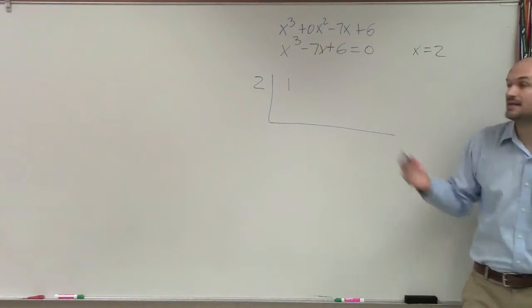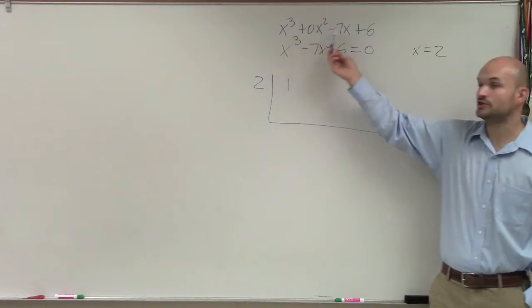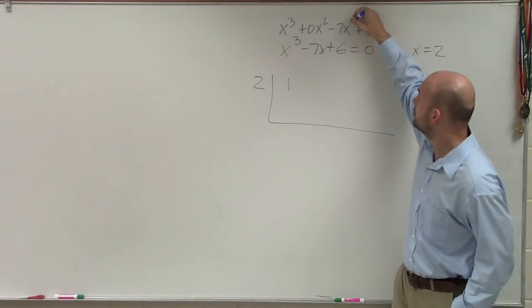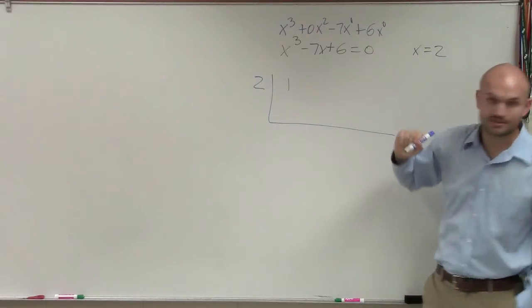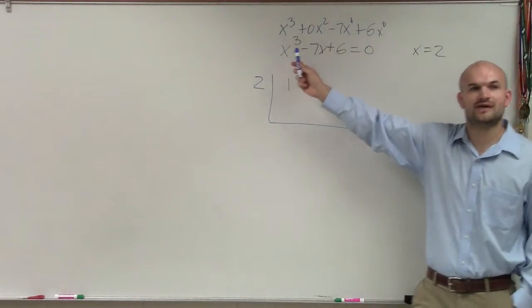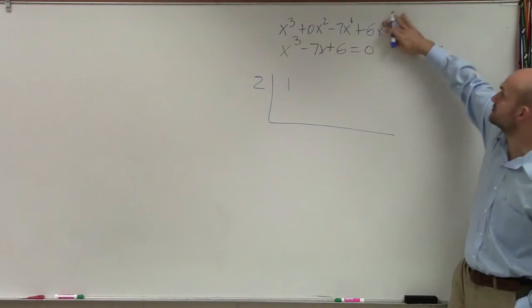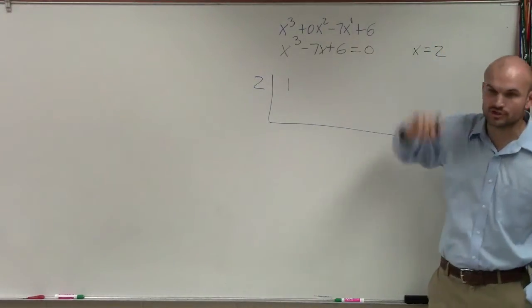When we're applying synthetic division, you have to make sure you go in descending order. Notice how the exponents go 3, 2, 1, x to the 0. You have to make sure you have every single one of those terms. x to the 0 is obviously 1, so that's why we don't write it in there.